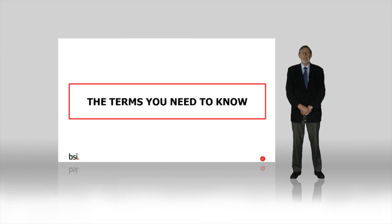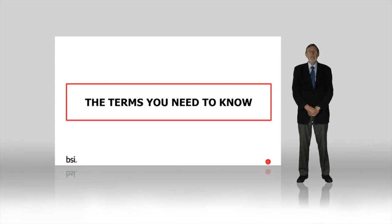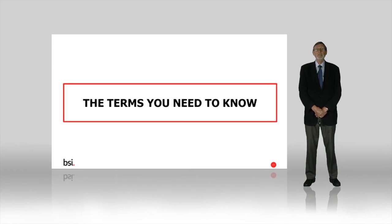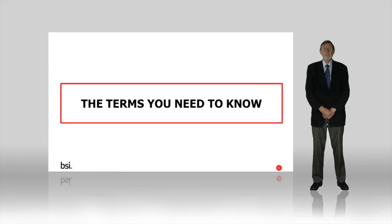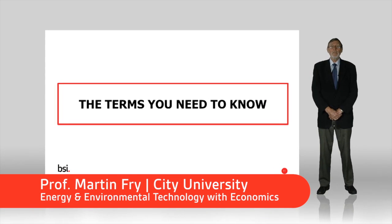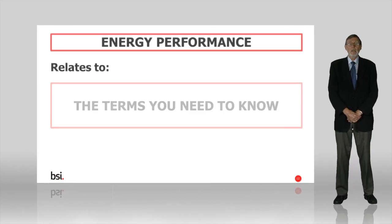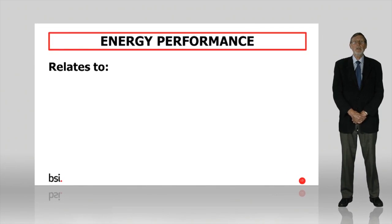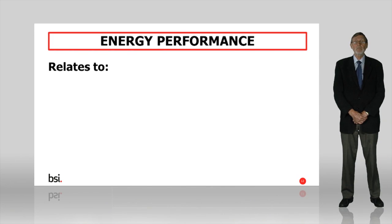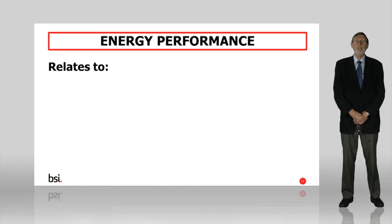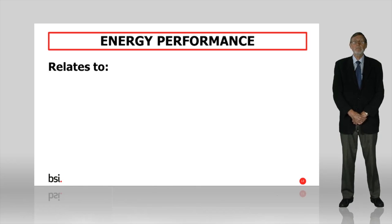Before we take a look at each part of the planning process in more detail, let's check we're comfortable with the terminology associated with it. Firstly, what do we actually mean when we talk about energy performance? ISO 50001 defines energy performance as a measurable result related to energy use, energy efficiency or energy consumption. Hence there are three aspects in which you could measure energy performance. Let's explore their meaning in a bit more detail.